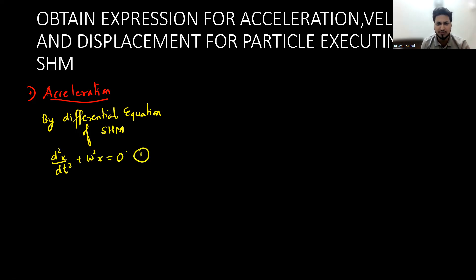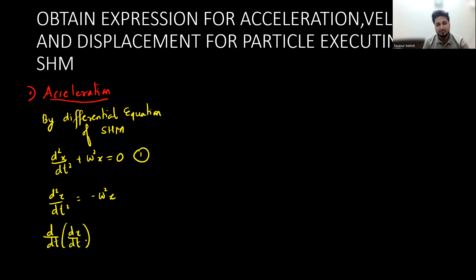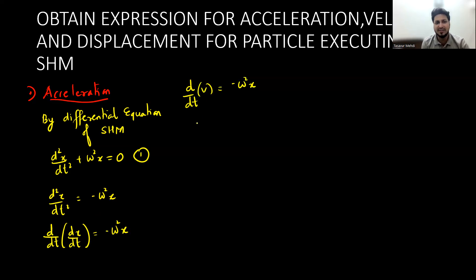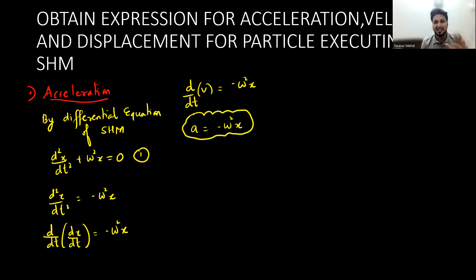Now, from this equation we can write d²x/dt² = −ω²x. What is d²x/dt²? It is the rate of change of velocity, which is acceleration. So acceleration = −ω²x. That is very smooth and simple — acceleration is minus omega squared times x.